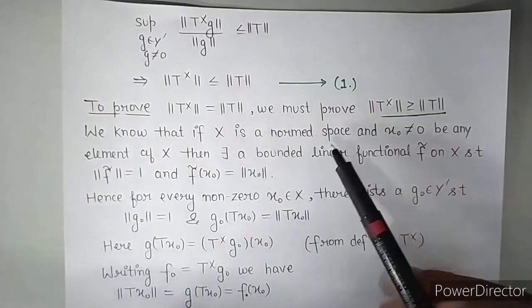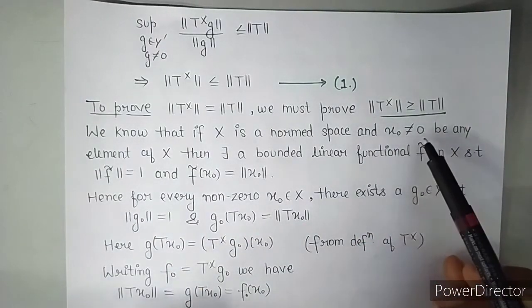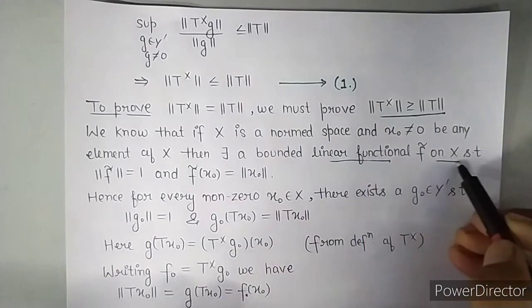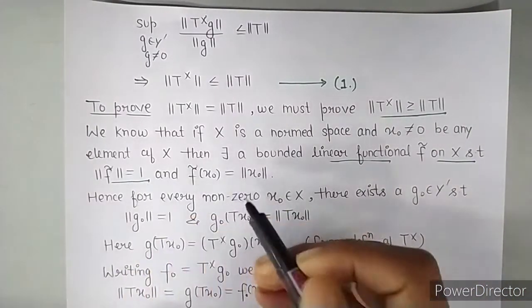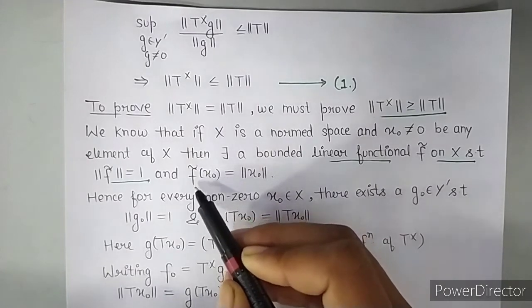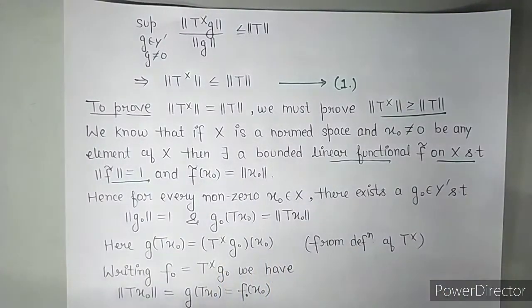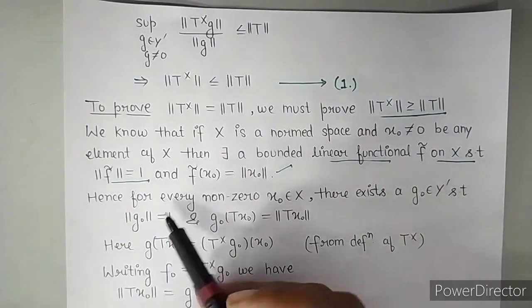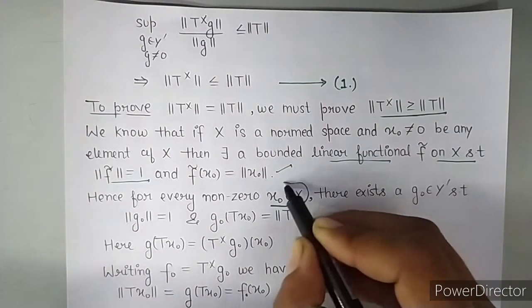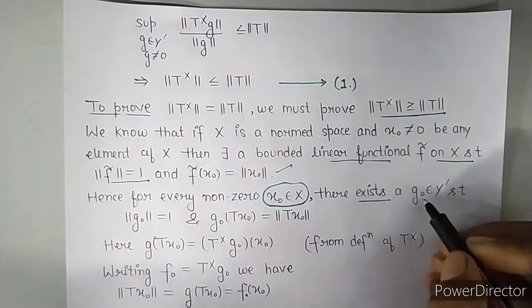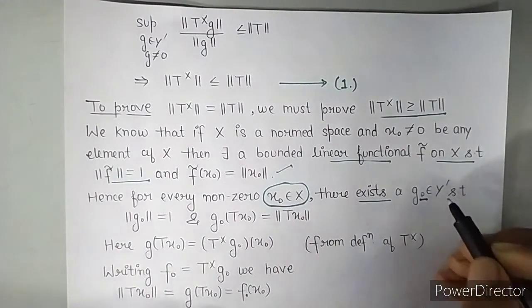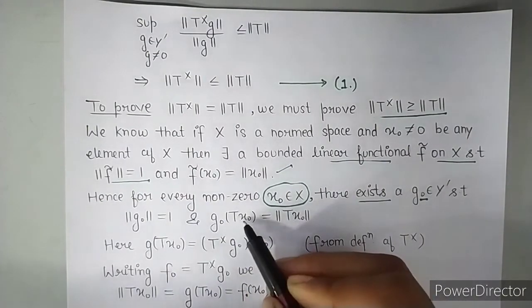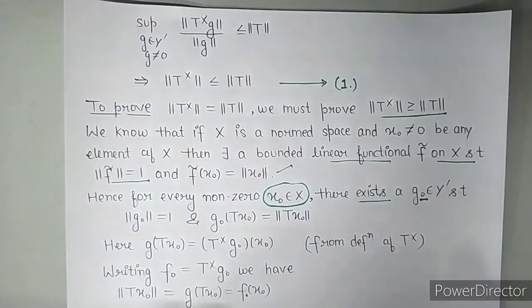We know that if X is a norm space and X0 be a nonzero element of X, then there exists a bounded linear functional F tilde on X such that norm of F tilde is 1 and the image of X0 under F tilde equals norm of X0. So this is our statement. So according to this here we will have nonzero element X0 of X and G0 from dual space of Y such that norm of G0 is 1 and G0 of TX0 equals norm of TX0.